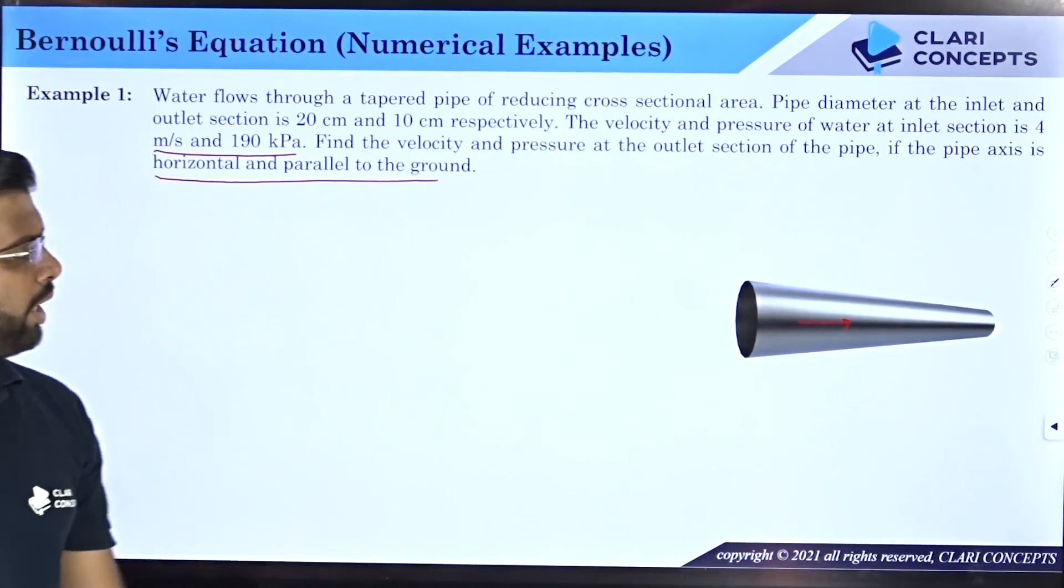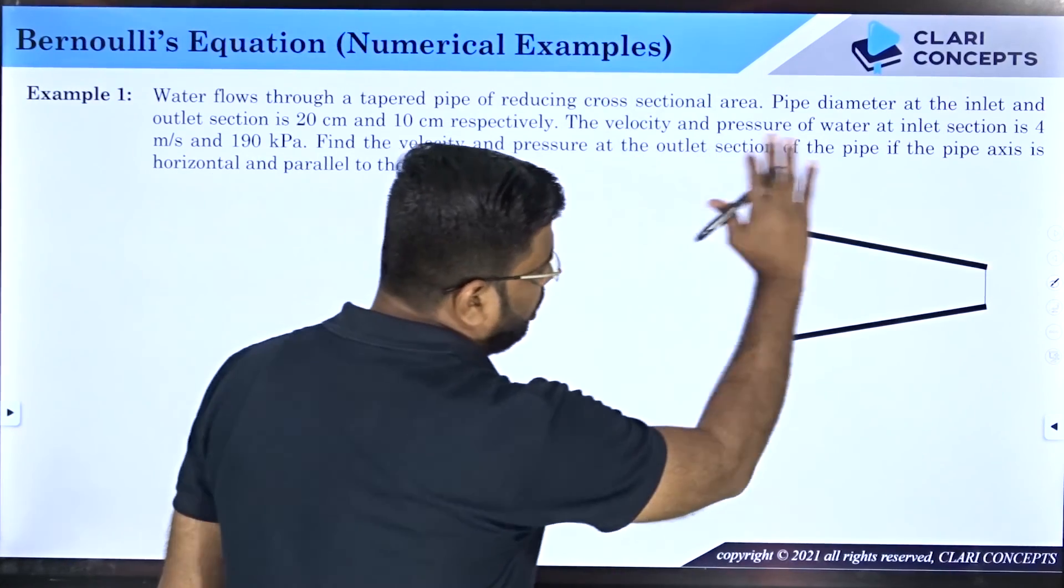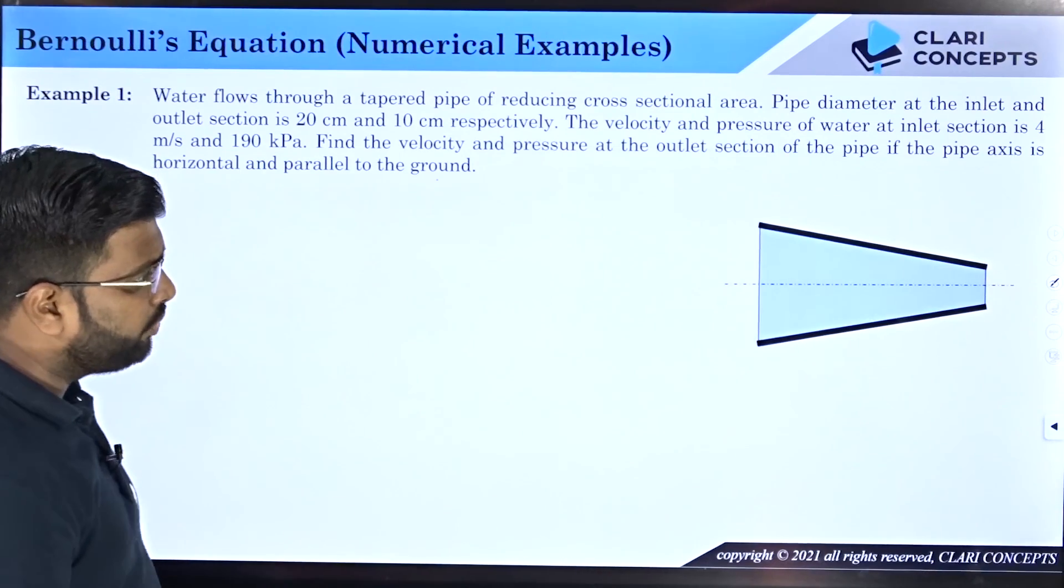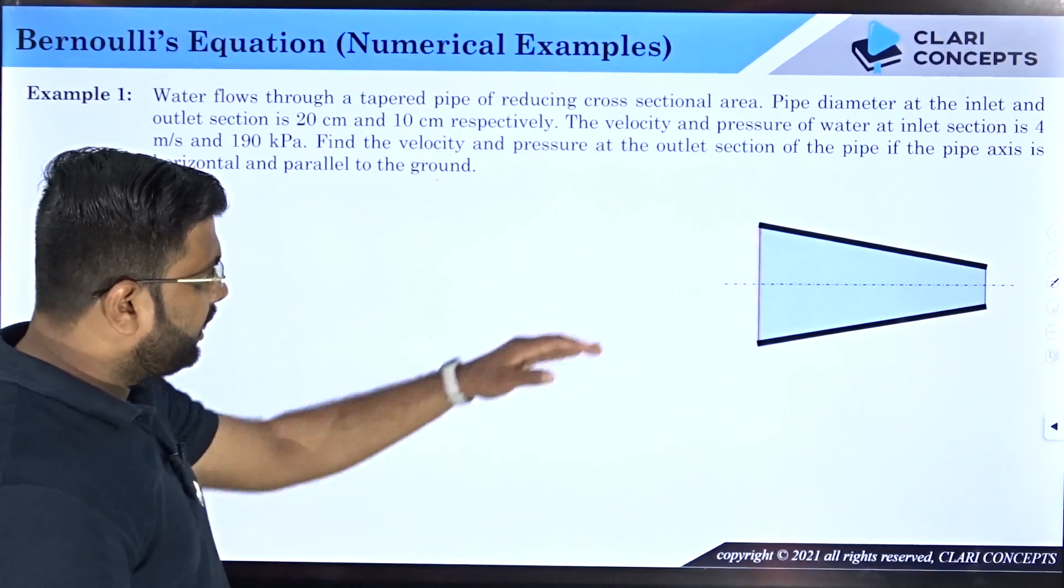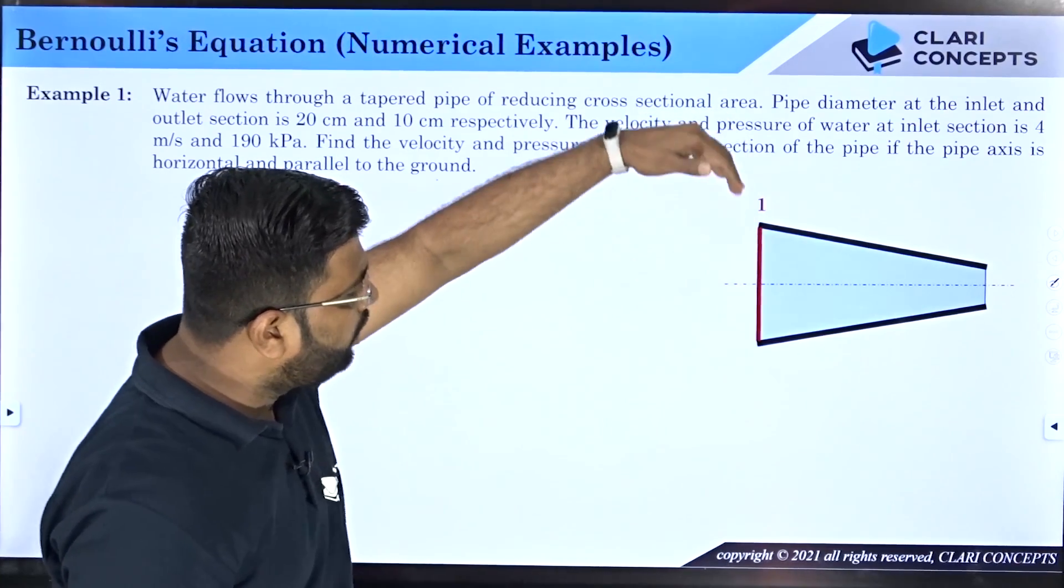Let me just draw a sectional view. If I draw sectional view, I can see a cross section of the pipe something like this, whereas the fluid is filled between the pipe. Water, this is the centroidal axis, center axis of the pipe. Let us mark this inlet section to be 1 and outlet section to be 2.